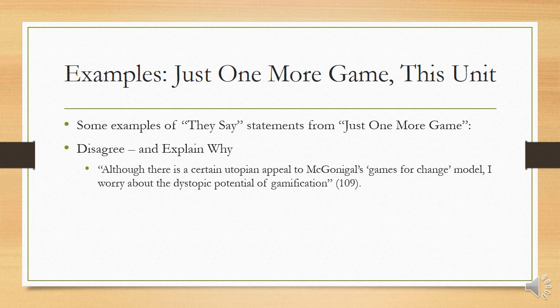A utopian society is one where everything is good, everyone's getting along and things are going great. He's saying her idea is really appealing if we live in an ideal society, but his concern is that we don't — and the reality is that companies will exploit this. If we get rewards for achievements in games, companies can find a way to market products to us and manipulate us through that. A dystopian society is like the Hunger Games — everything is bad in the future. So he's saying, yeah, there's something very positive about McGonigal's idea, but his concern is she's not really addressing this very worrisome issue.